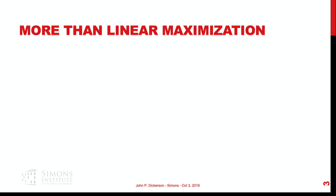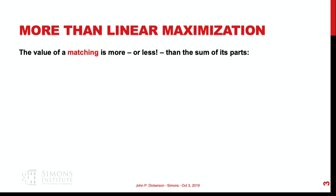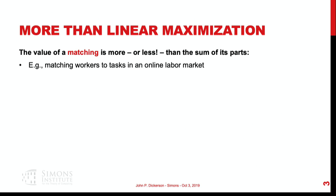In today's talk, I'm going to talk about moving beyond linear maximization in these markets, focusing on it for a particular context: diversity promotion. The value of a matching is sometimes more and sometimes less than the sum of its individual parts. For example, in an online labor market like Upwork, we might not want to match three identical workers to a task — instead we want coverage of somebody who speaks English, somebody who speaks French, and somebody who speaks Spanish, labeling an image with different forms of the same label.